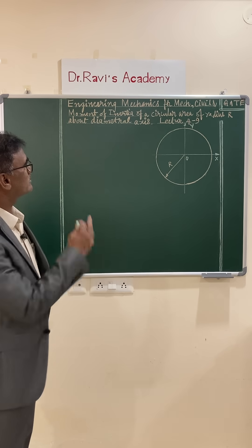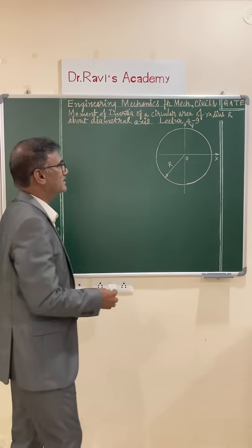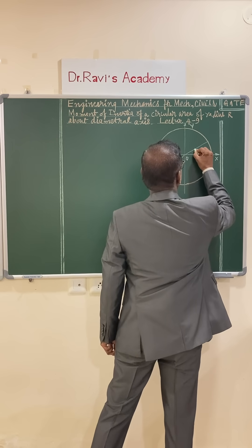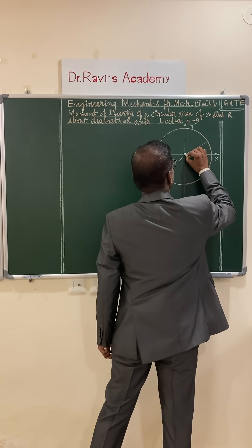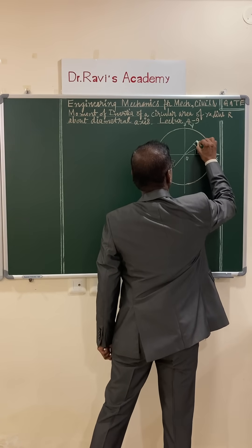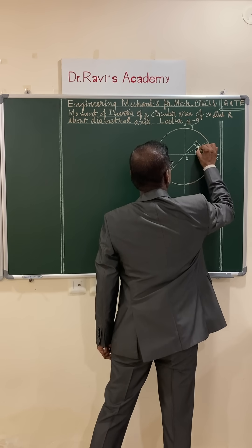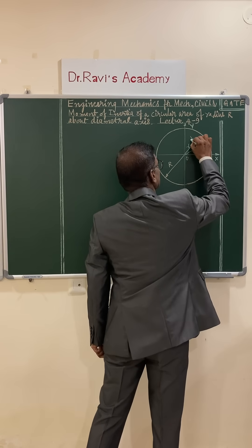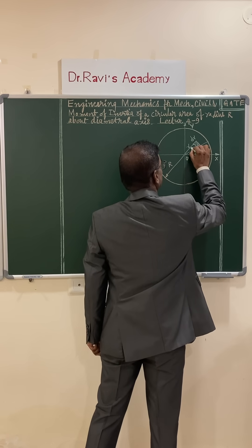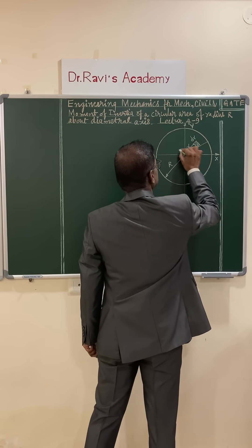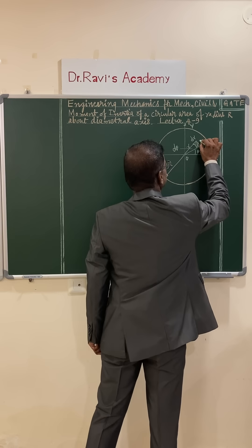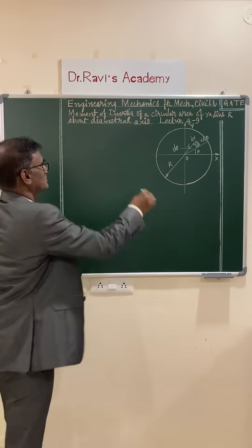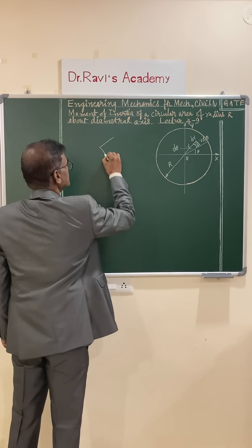To calculate this about the diametral axis, let us select an element — a double integral element at a distance theta from the x-axis. The element is at a distance r from the center, with elemental thickness dr and elemental included angle d theta. This gives a side length of r·d theta. I am just drawing the magnified view of the element.